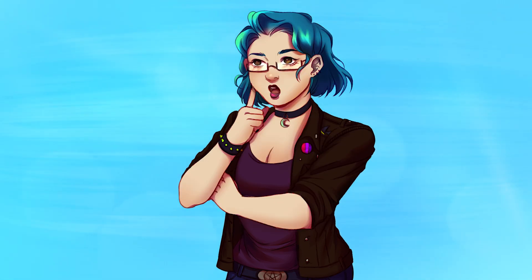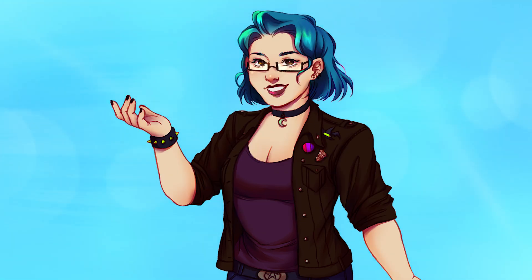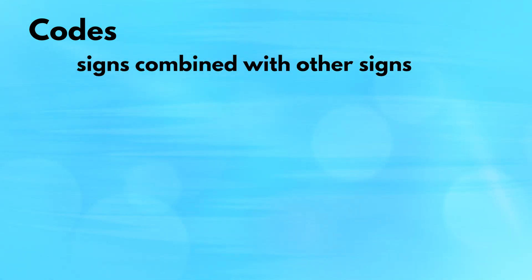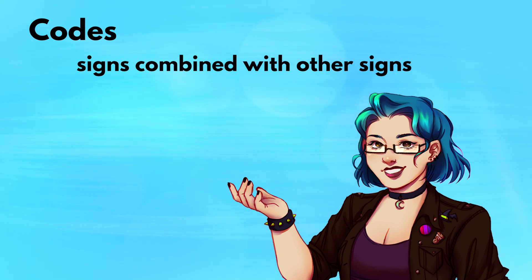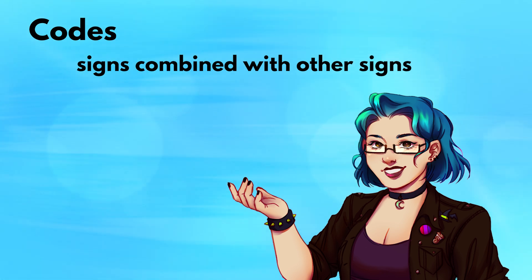So that's the gist of signs. But what do we do with them? Well, you could just use them on their own, such as with a logo. But often enough, you'll see these signs combined with other signs, and these are called codes. These codes, in turn, can provide a lot of information if you're paying close enough attention, and we see them everywhere in society.